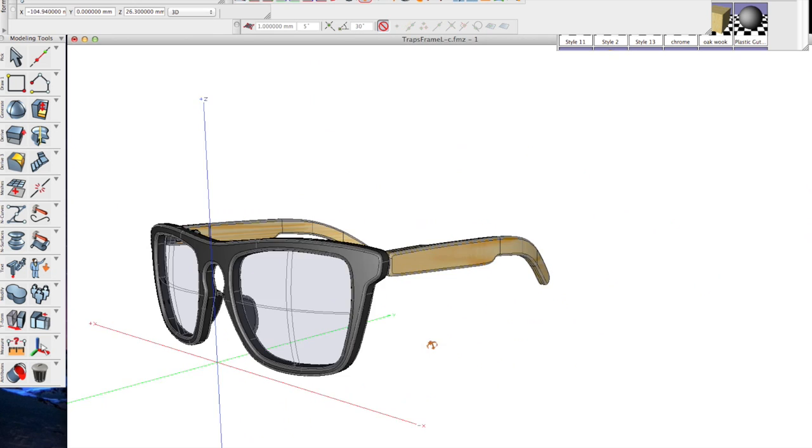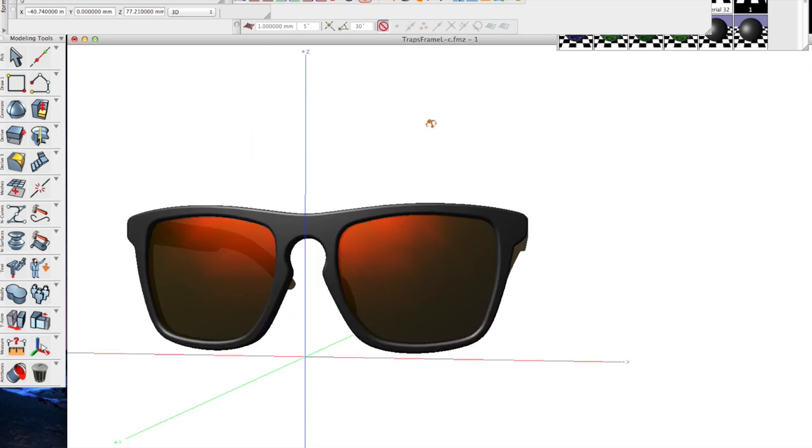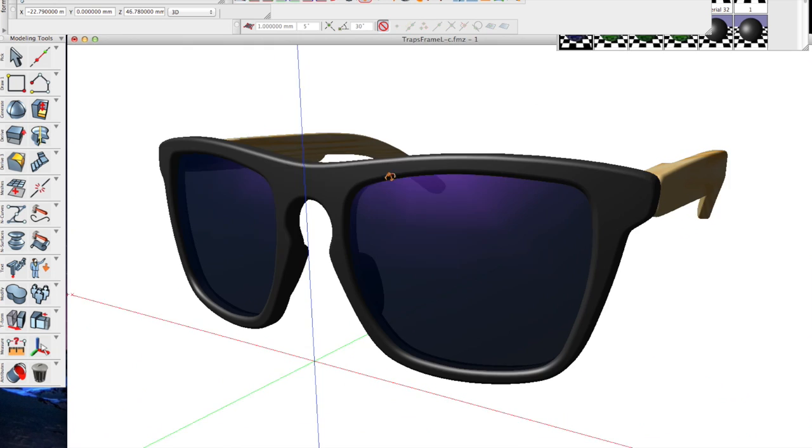Modeling the sunglasses in the computer allows me to quickly make changes to things like color, texture, materials, and see them instantly.